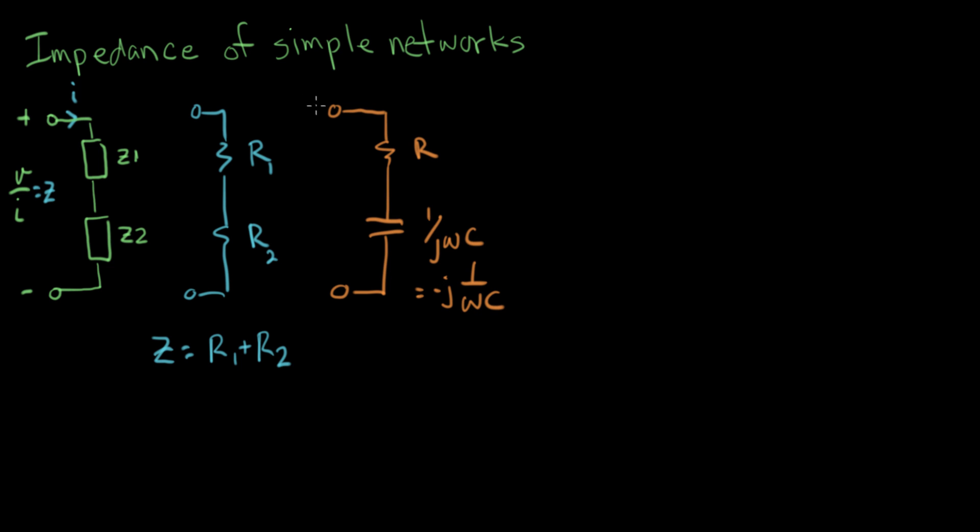So if I want to know the impedance of this network here, Z is, now this is the great trick of doing this transformation. We can use the same laws that we know for resistors on this transformed circuit. We transformed it into the frequency domain.